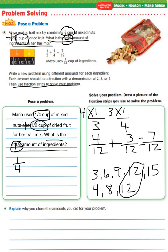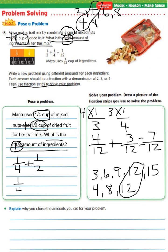We set up one-fourth plus one-half. We find our common multiples: multiples of two are two, four, six, eight; multiples of four are four, eight. We stop at the common multiple of four. Since we already have the denominator of four, we bring it straight down. For one-half, four divided by two equals two, and two times one equals two. So the equivalent fraction for one-half is two-fourths. We add the numerators: one plus two equals three. Our denominator stays as four. So the total amount of ingredients Maria will use is three-fourths cup.